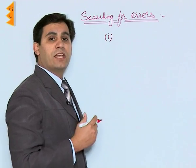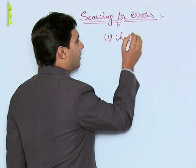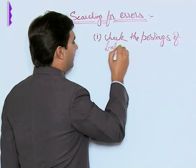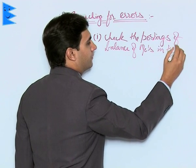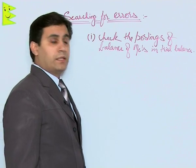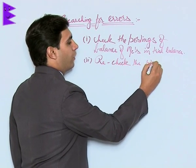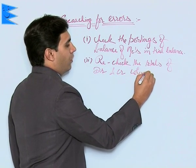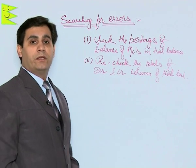First, what the accountant will do is check the postings of the balance of each account in the trial balance — that is, whether the balance of every account has been posted or not. Then, he must recheck the totals of the debit and credit columns of the trial balance, as there is a possibility that you might have totaled them wrongly.